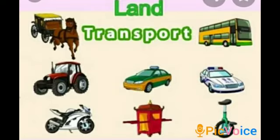First: land transport. Land transport is the transport or movement of people, animals or goods from one location to another location on land. The two main forms of land transport can be considered rail transport and road transport.